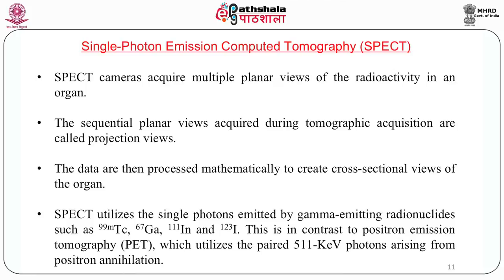The data are processed mathematically to create cross-sectional views of the organ. SPECT utilizes single-photon emission from gamma-emitting radionuclides — technetium, gallium, indium, and iodine-123. Most of these isotopes have single photons, and technetium-99m is the workhorse because it gives a 140 keV monoenergetic photon. This is in contrast to positron emission tomography, which uses paired 511 keV photons. In PET, a positron hits an electron, annihilation takes place, and two photons travel in opposite directions at 180 degrees. The detector in PET is different from that in SPECT.